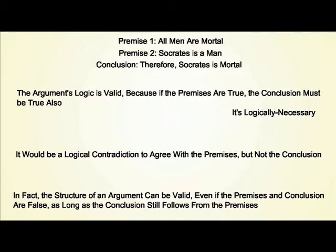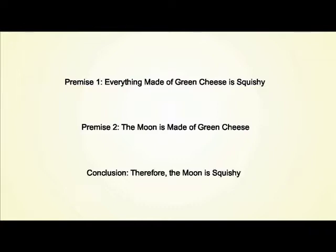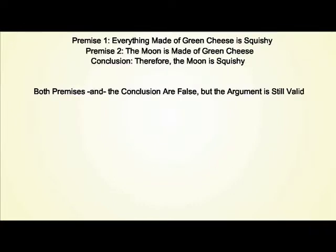In fact, the structure of an argument can be valid even if the premises and conclusion are false, as long as the conclusion still follows from the premises. As you can see, both premises and the conclusion are false, but the argument is still valid.